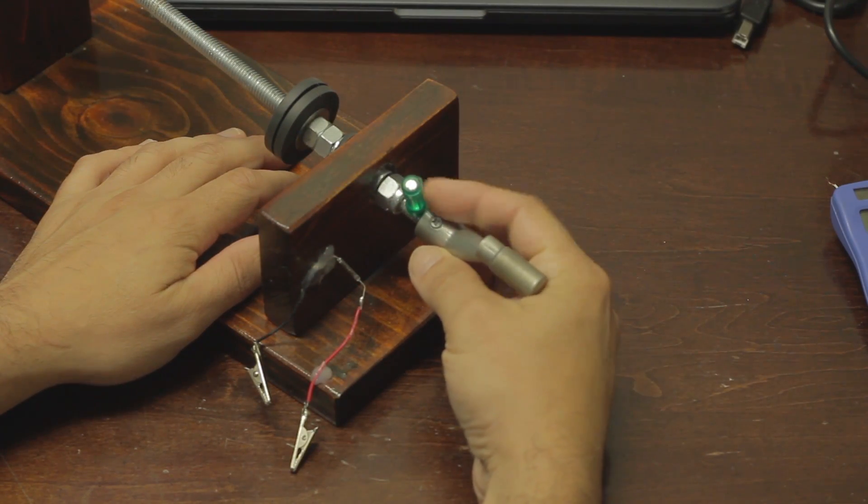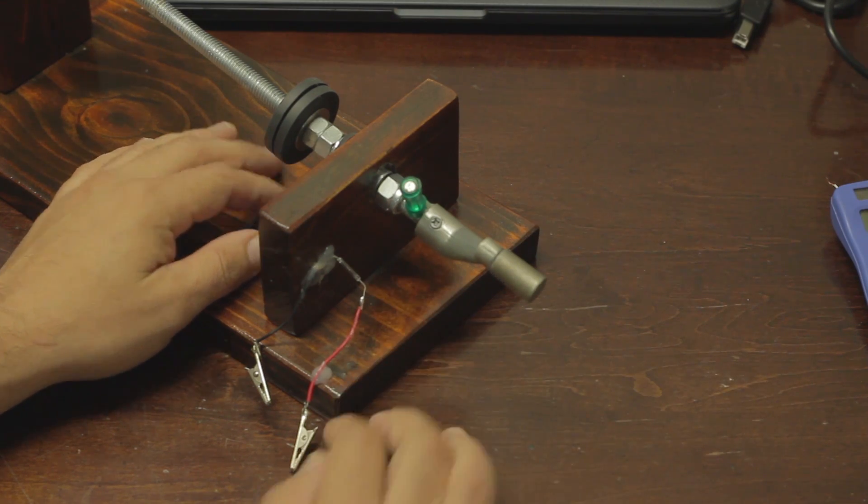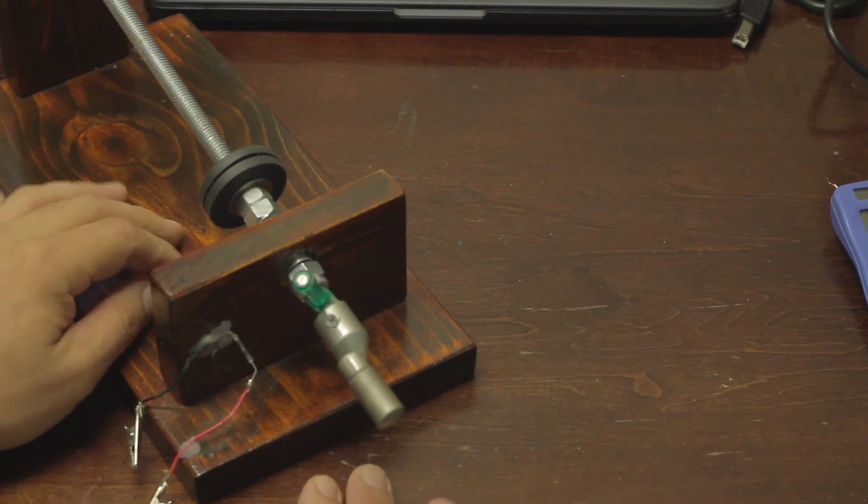I've simply hot glued a small magnet to the threaded rod and hot glued a reed switch with leads and alligator clips attached to the base.